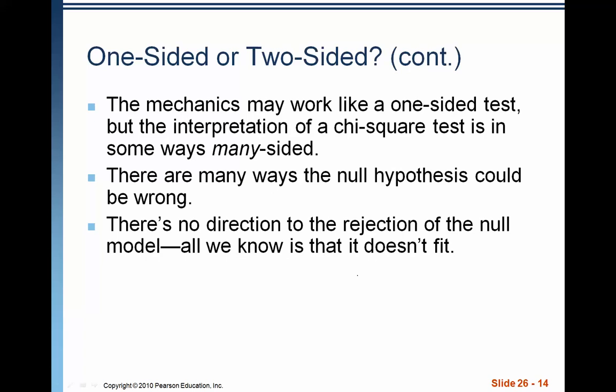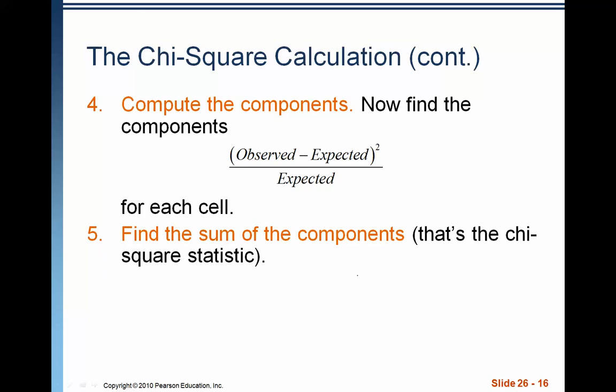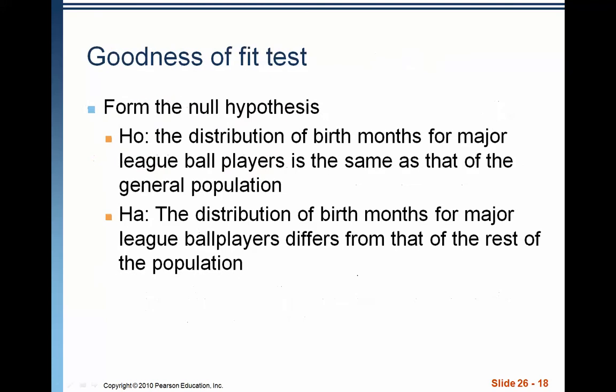They work like a one-sided test, but the interpretation of a chi-square test is in some ways many-sided, meaning that there are many ways that the null hypothesis can be wrong. Because our null hypothesis simply states if it is the same or if it's not the same. So here's kind of a summary of the actual calculation. Again, this is only if you have to do it by hand. We're going to do it with the calculator. You're going to find the expected values. That's what we did in the first slide. We're going to compute the residuals. We take the observed minus expected. We're then going to square those residuals. Then we're going to take this observed minus expected squared over expected thing. And then we're going to find the sum. That's the chi-square statistic. We use the degrees of freedom. And then we use the chi-square statistic to find a p-value. So let's actually look at the null hypothesis here and then do the mechanics.